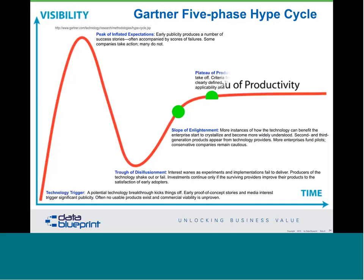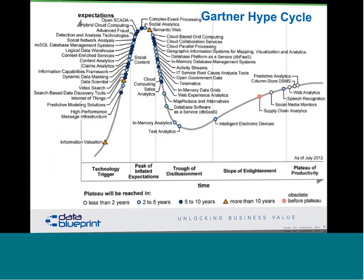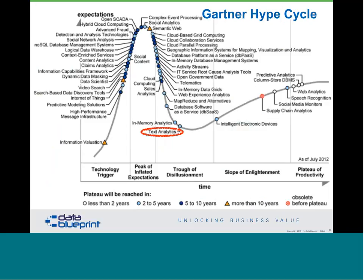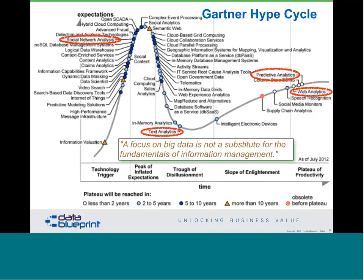A Gartner Hype Cycle from July 2012: if you were invested in text analytics, you were in great shape — there was nowhere to go but up. Social network analysis was five to ten years away from peak hype and headed for a crash. Predictive analytics and web analytics were approaching a relatively steady state. Gartner also said: focus on big data is not a substitute for the fundamentals of information management — something we agree with 100%.